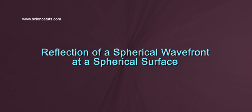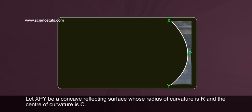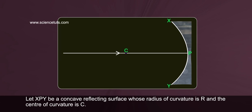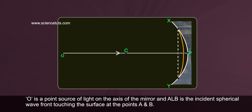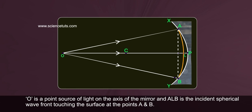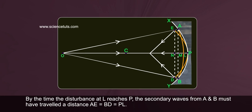Reflection of a spherical wave front at a spherical surface. Let XPY be a concave reflecting surface whose radius of curvature is R and the center of curvature is C. O is a point source of light on the axis of the mirror, and ALB is the incident spherical wave front touching the surface at points A and B.